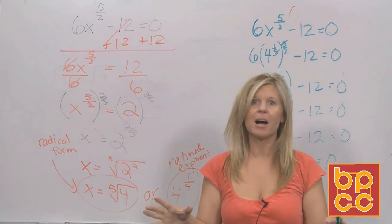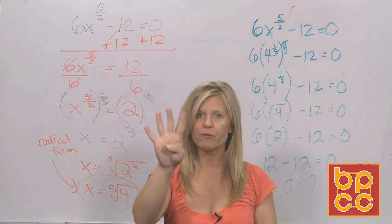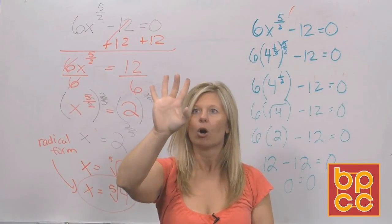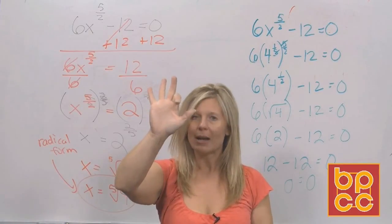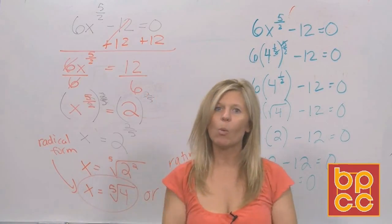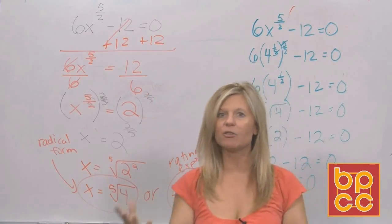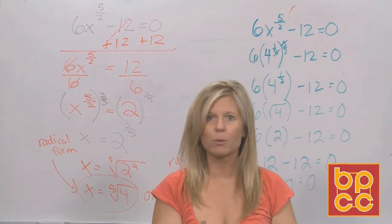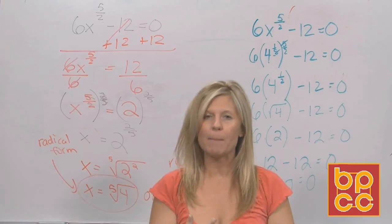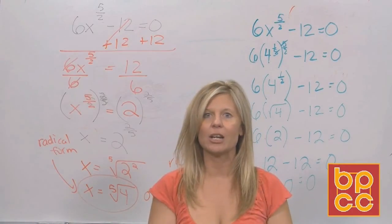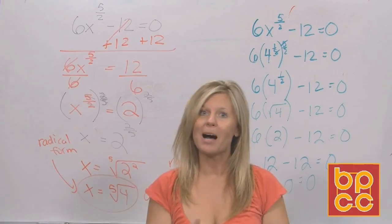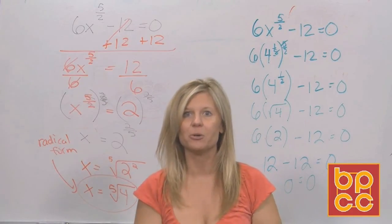We have now completed module 5, covering four different types of equations: polynomial, radical, rational, and rational exponents. In solving all four, we used algebra skills we already knew, reducing these equations to linear or quadratic form. Module 6 is coming up — something new. See you then!